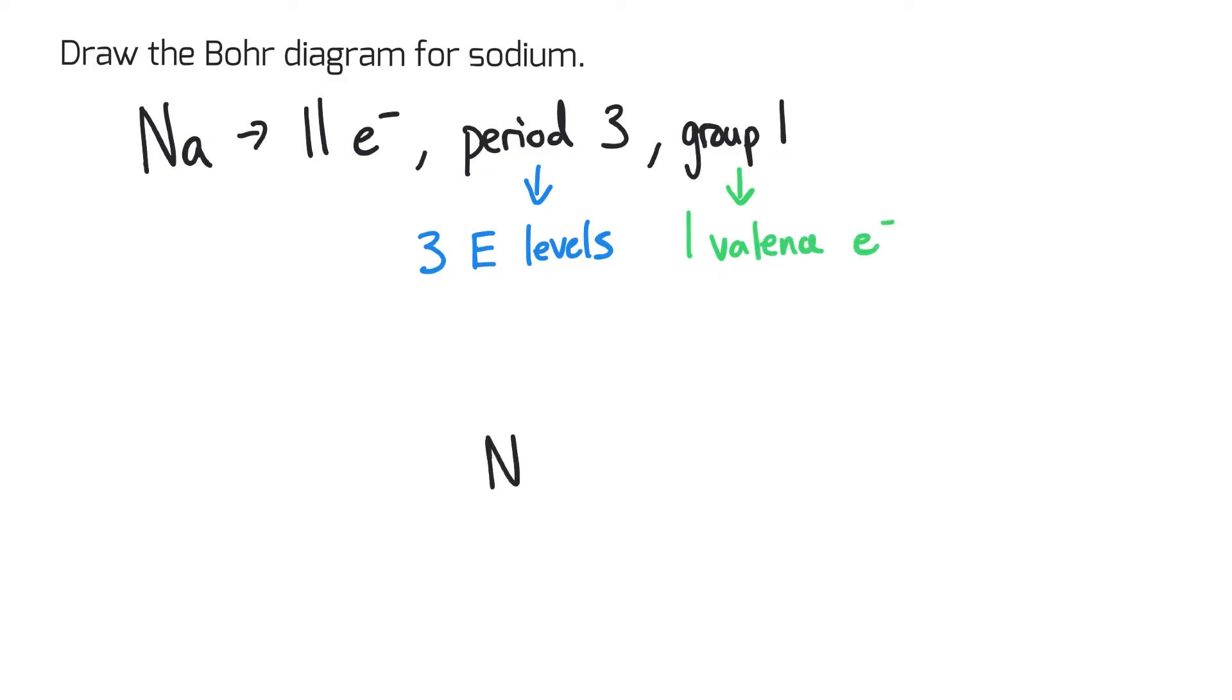So let's start by drawing the symbol Na. In the first energy level I'm going to draw, there are 2 electrons. In the second energy level, there are 8.